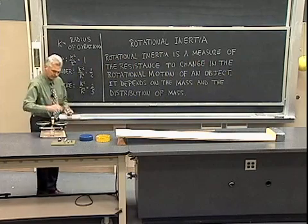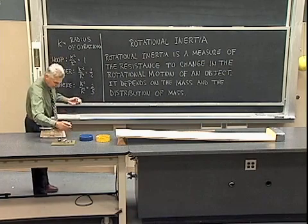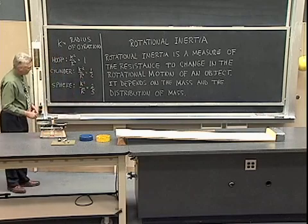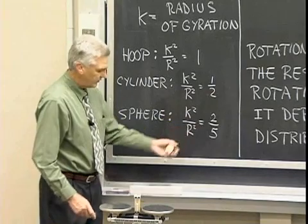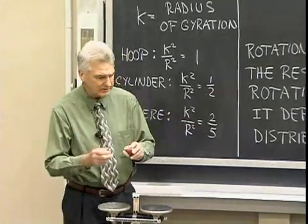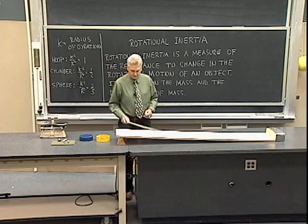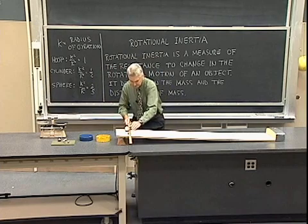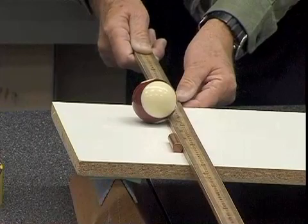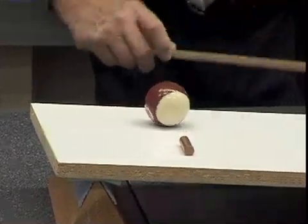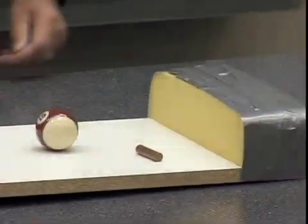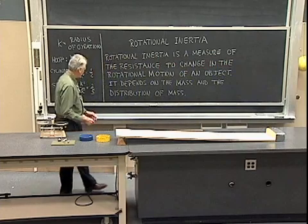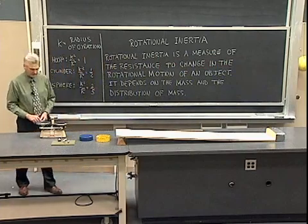Now, if we were to compare a sphere with a cylinder — a cylinder is one half and a sphere is two-fifths. Well, one half is just a little bit greater than two-fifths, so we might expect the sphere would edge out the cylinder just a little bit in the race down the hill. They might be so close that we won't be able to tell the difference, but let's try the experiment. It turns out the sphere outraces the cylinder by just a little bit because it has a slightly smaller ratio.